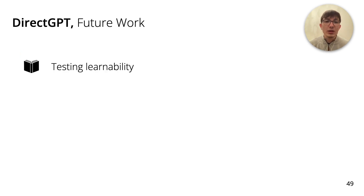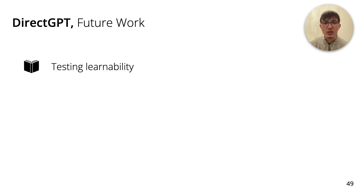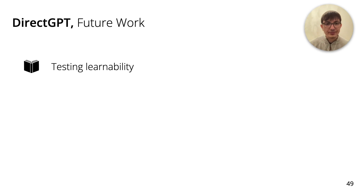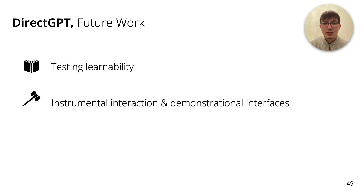Before I conclude, I want to mention some future work. First, DirectGPT might have other advantages that could be interesting to evaluate. For example, it is known that direct manipulation helps with learnability by enabling a multi-layered approach to learning, so future work could investigate if such learning occurs with DirectGPT. From our observations, we expect that localizing prompts and referring to objects would be quickly learned, but reusing prompts would be more of an expert feature. Similarly, several extensions to direct manipulation have been proposed, such as instruments of interaction and demonstration-based interfaces, and we believe these extensions could also help interact with large language models.